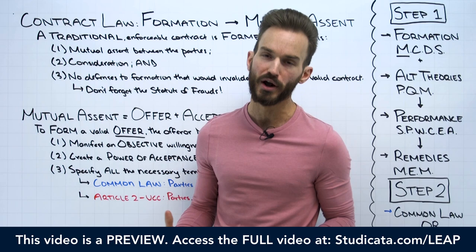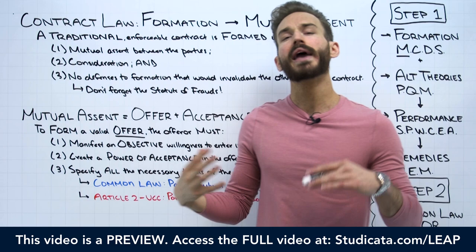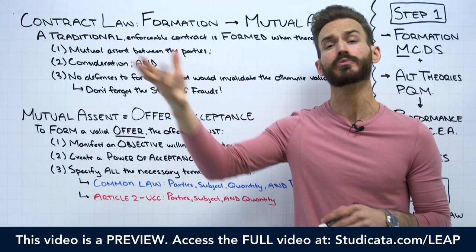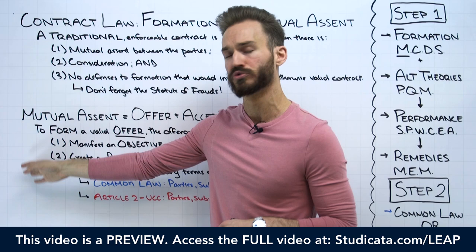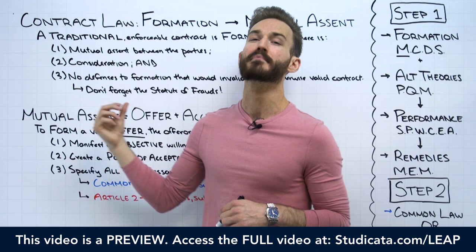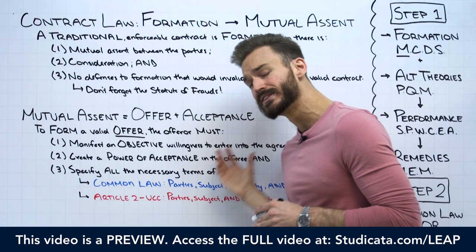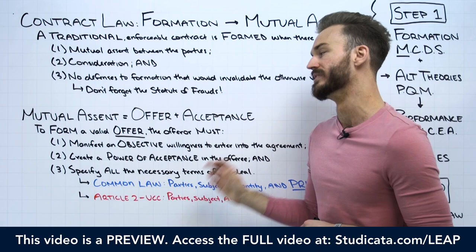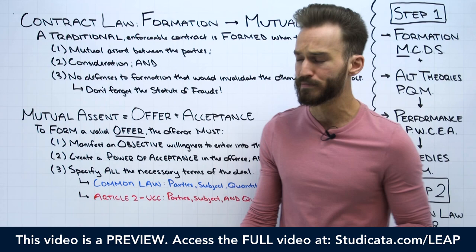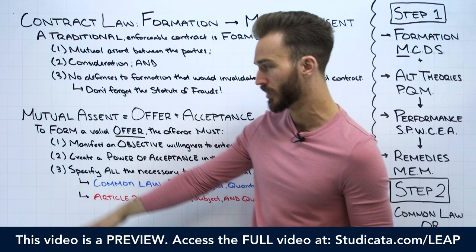To begin our analysis of contract formation and mutual assent, we have to determine whether we have a valid offer. To form a valid offer, the offeror must: manifest an objective willingness to enter into the agreement, create a power of acceptance in the offeree, and specify all the necessary terms of the deal. This is always step one in our analysis of mutual assent.